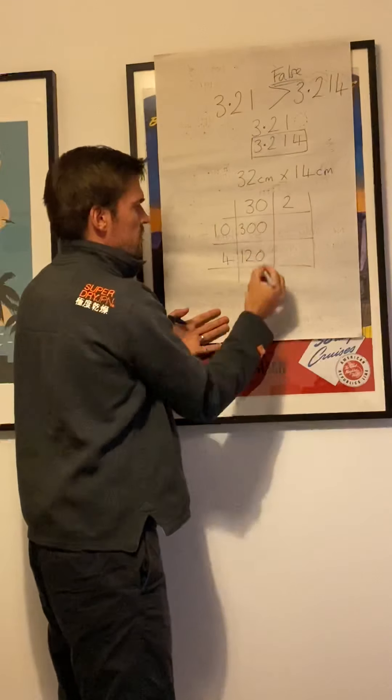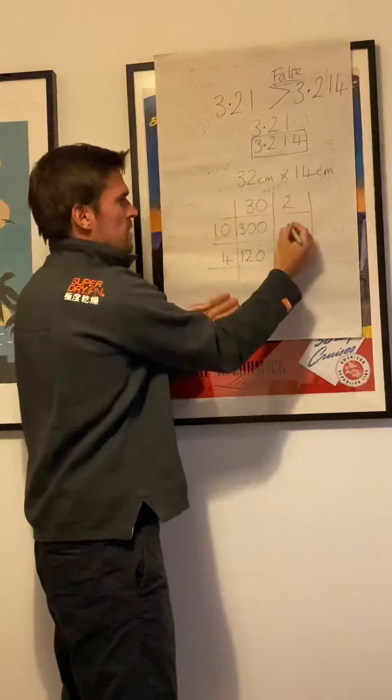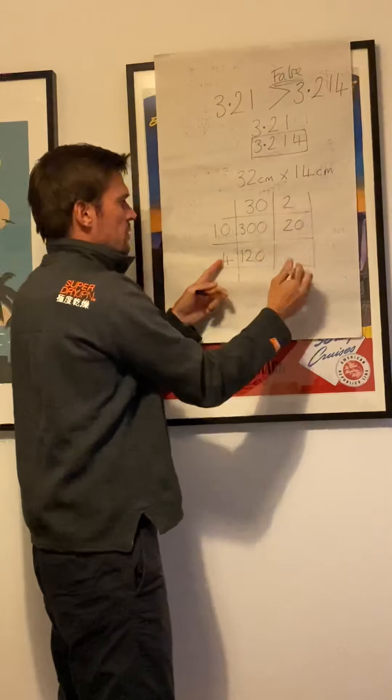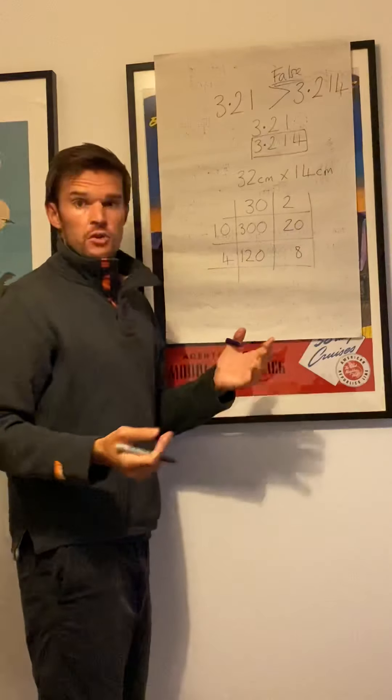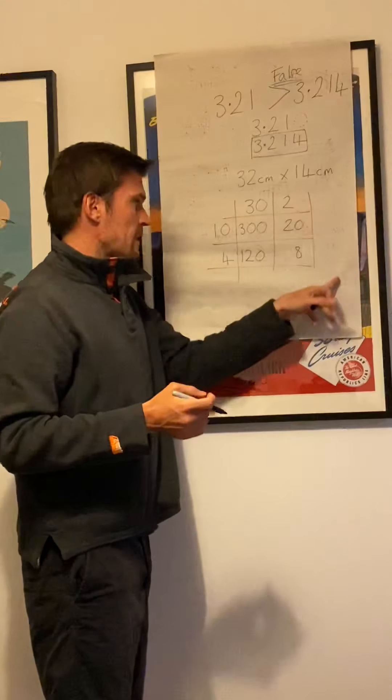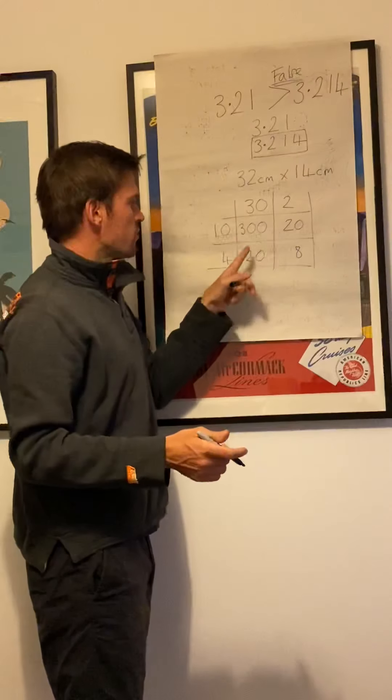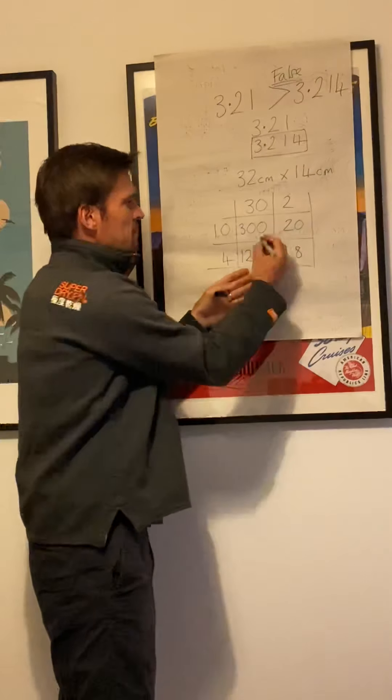2 times 10, we know it's 20. 2 times 4, 8. Then we add them up. You can either write them in a column down here or you can do it mentally. 300, 420, might give them a tick.